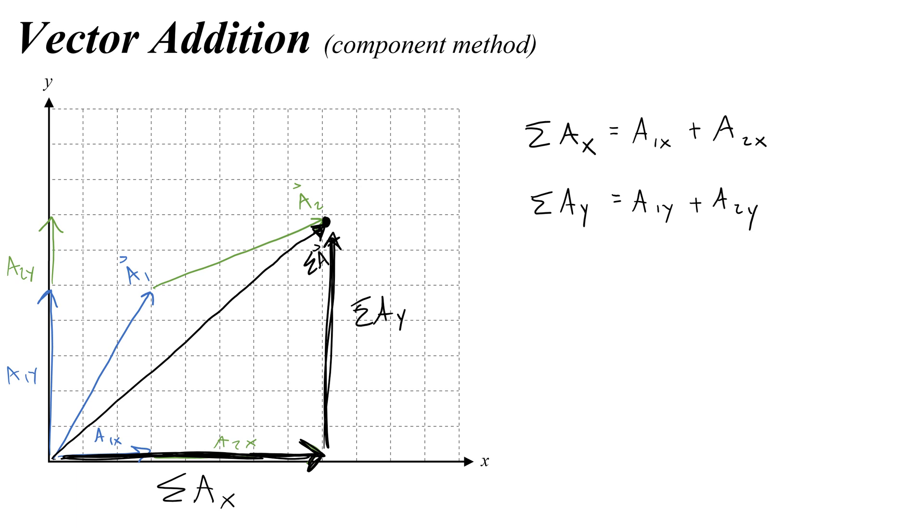So when we do this, when we add the components together, the a1x plus a2x, the a1y plus a2y, we're using what's called the component method. And using the sigma ax and sigma ay, we'd be able to find the magnitude of this resultant vector. We would say sigma ax squared plus sigma ay squared. And we'd be able to find the angle, tangent inverse of sigma ay over sigma ax.